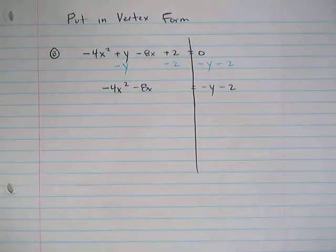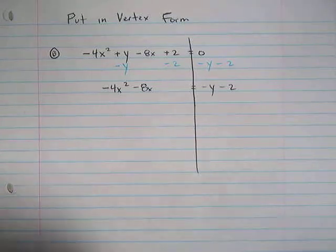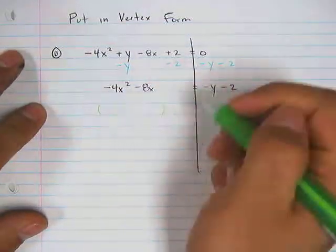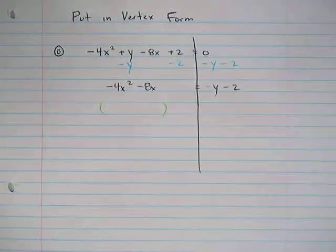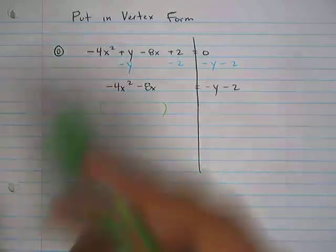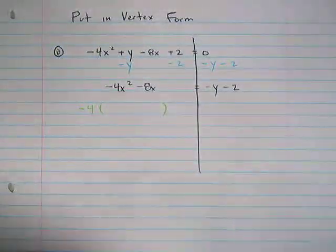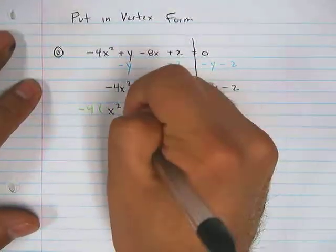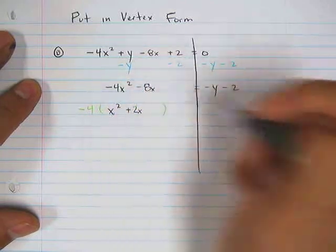You can't complete the square. Don't try completing the square. You must factor out a 4, and more specifically, not just a 4, a negative 4. So by pulling out this negative 4, what you're doing is you're saying this becomes x², this becomes positive 2x.